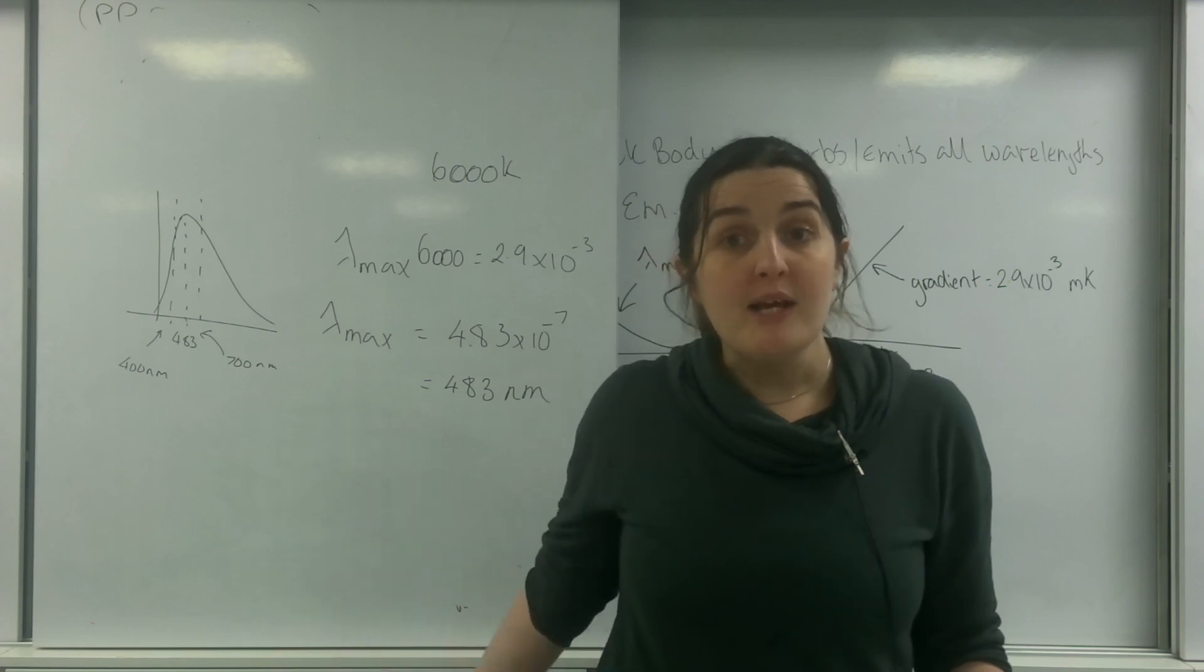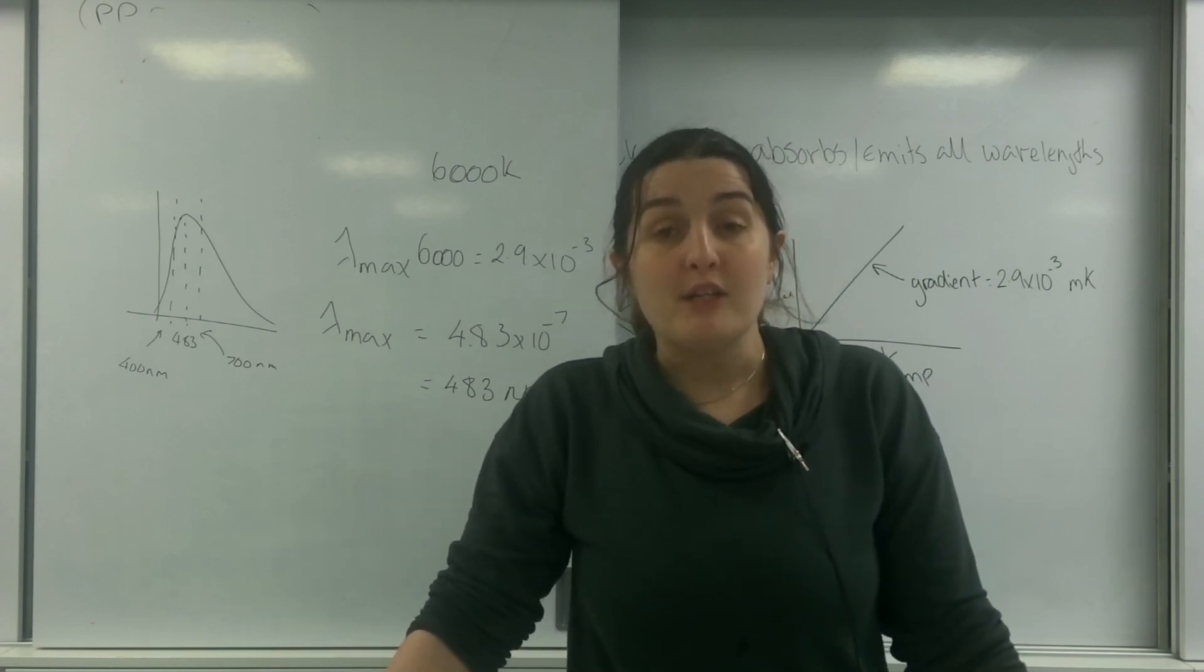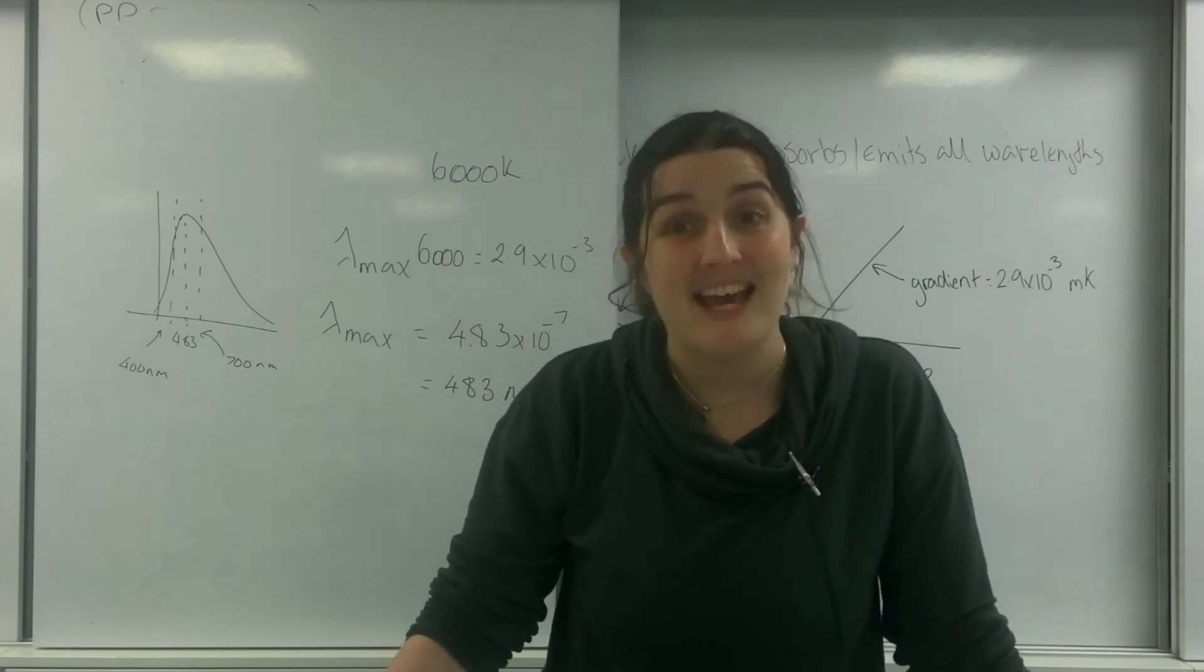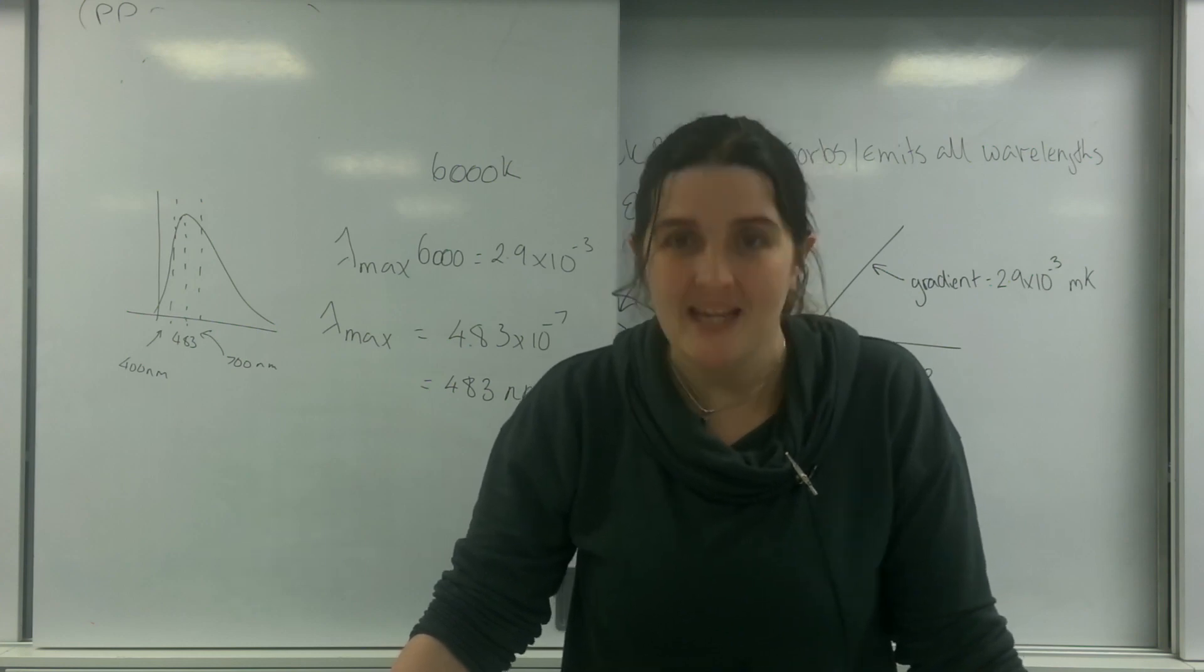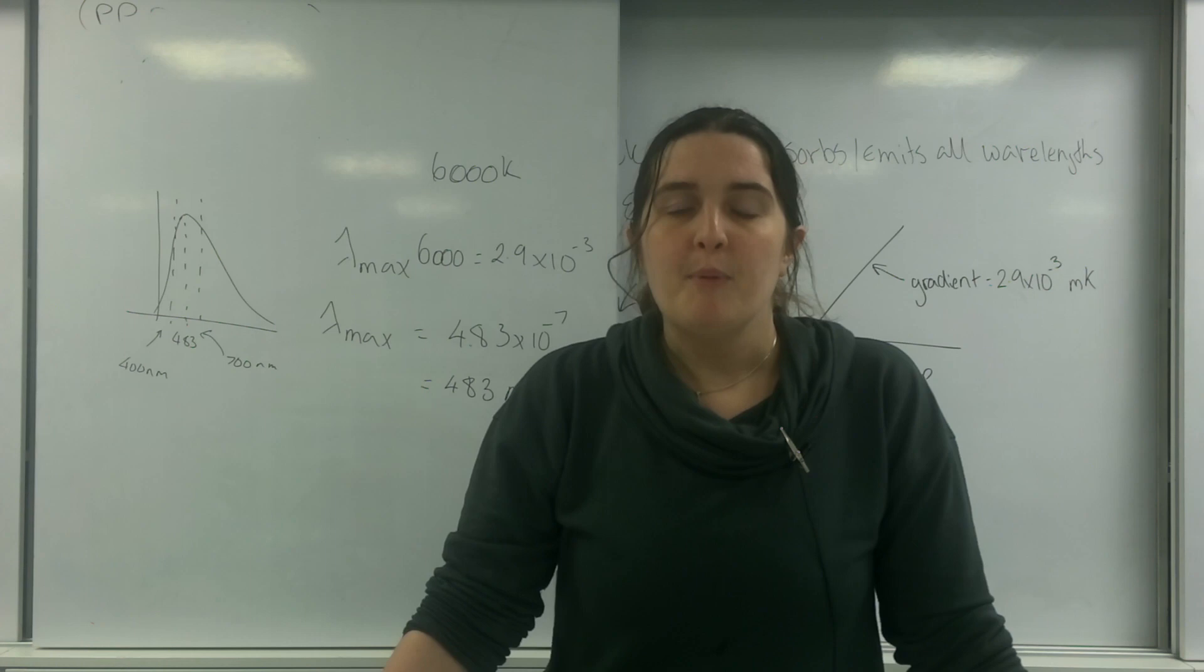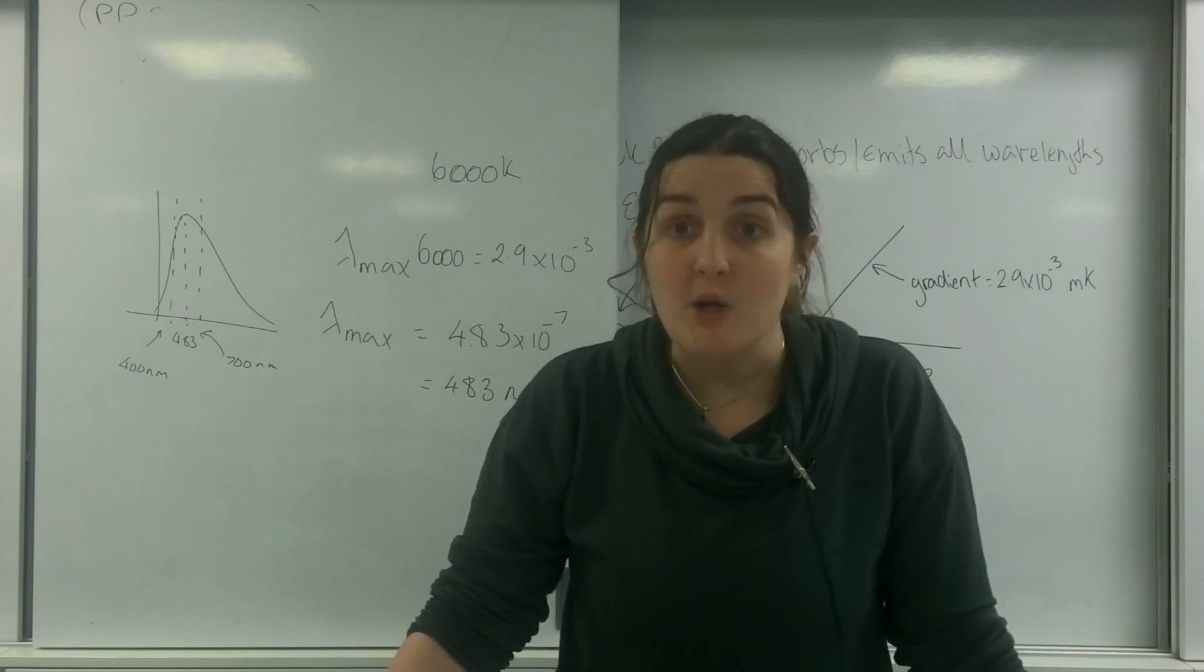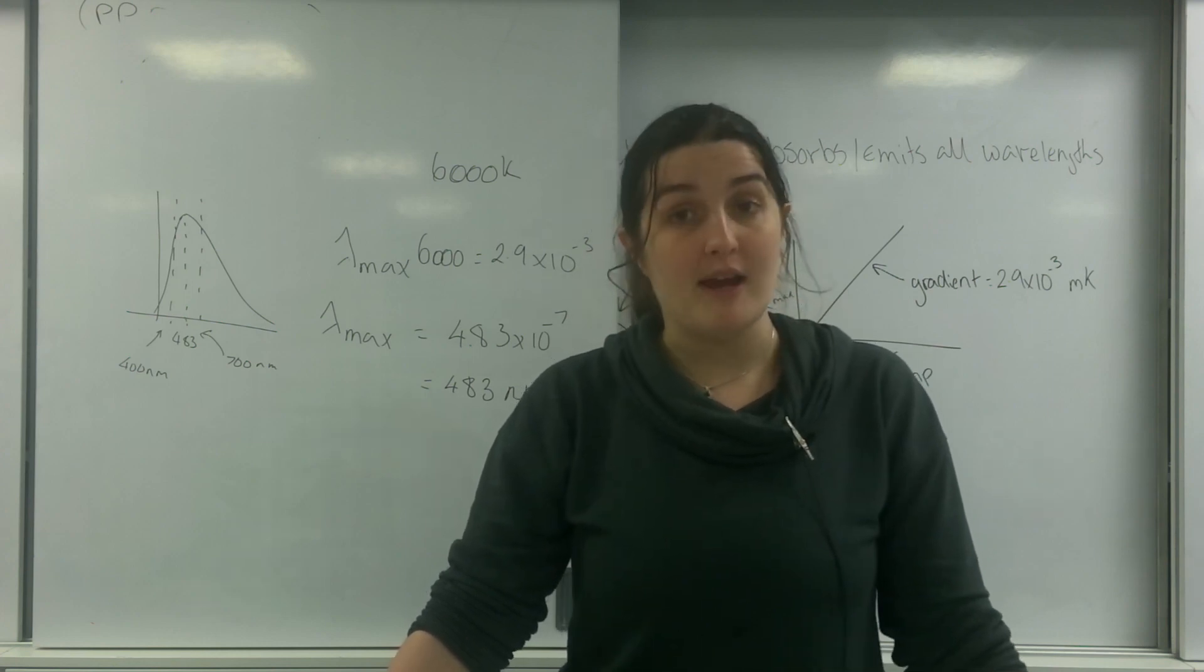But this fact that the peak wavelength that's emitted from the sun is on the blue end of the spectrum will make no surprise with the fact that you keep getting told to wear sunscreen to protect against UVA and UVB rays. Because our peak wavelengths are around the blue end of the spectrum, we also emit quite a lot of UV, which is why we must wear sunscreen to protect our skin from UV rays.